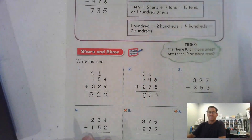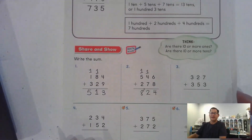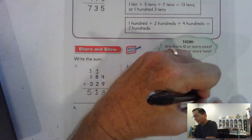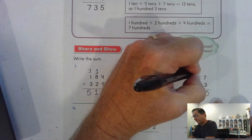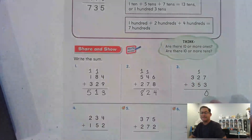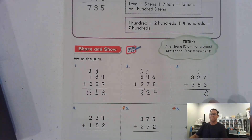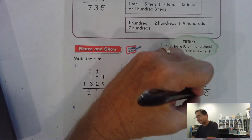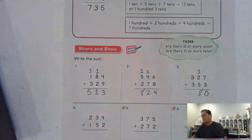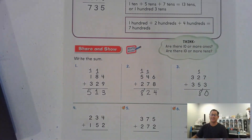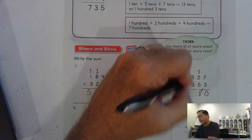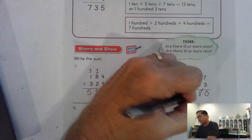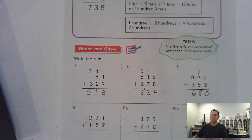Number three: seven and three ones is ten ones — trade that for one ten and zero ones. Five, six, seven, eight — eight tens, we don't have to regroup. Three and three hundreds, six hundred.